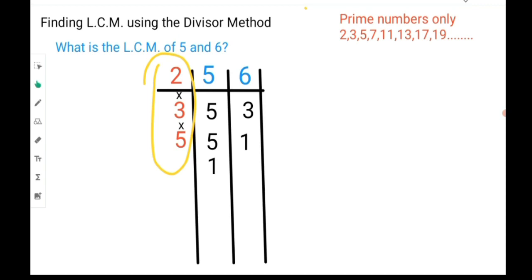Let us go further. The LCM of 5 and 6 is to multiply 2 by 3 by 5, and that would be equal to 30.